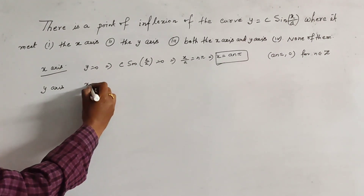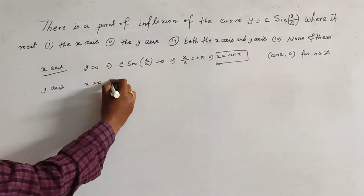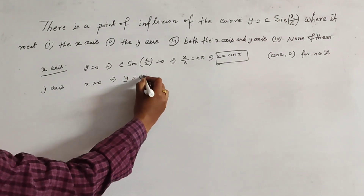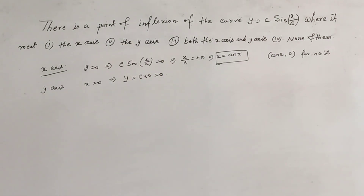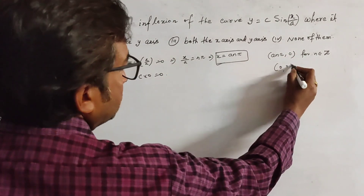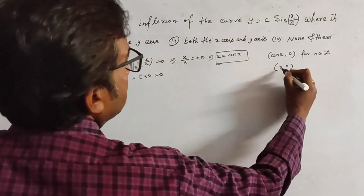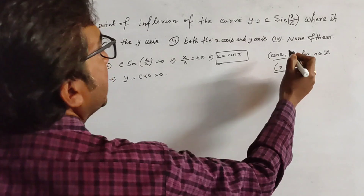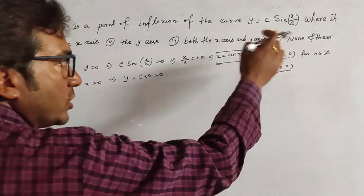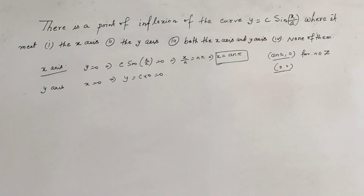If the curve meets the Y-axis, then X equal to 0, that is Y equal to C into 0, which is 0. So in this case, the point is (0, 0). Looking at both the X-axis and Y-axis, we get the point (0, 0).